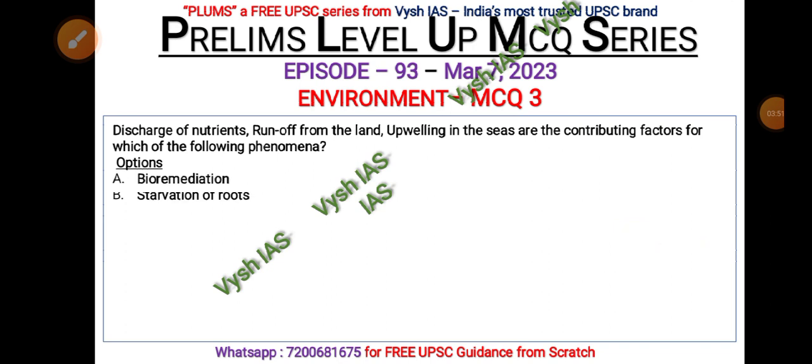The third MCQ: Discharge of nutrients, runoff from land, and upwelling in seas — these are contributing factors to which of the following phenomena? Options are: (A) bioremediation, (B) starvation of roots, (C) decay of organic matter, or (D) algal bloom. Those who have followed the environment lectures or read Shankar IAS should be able to answer this.